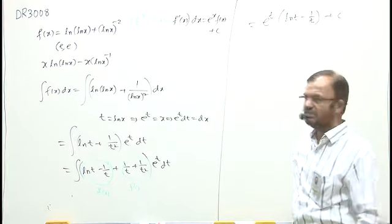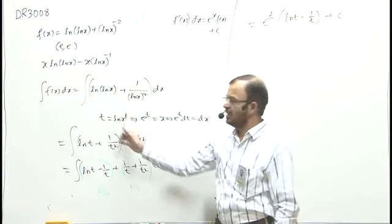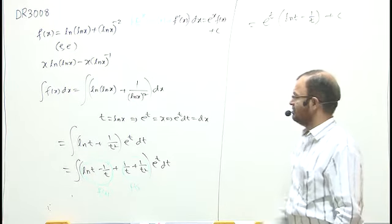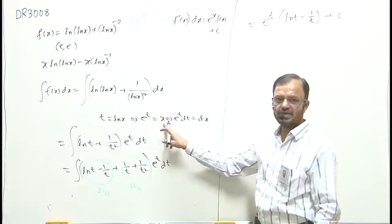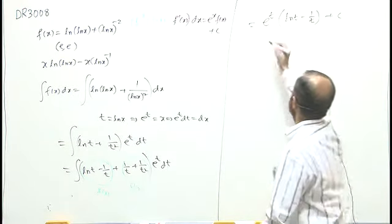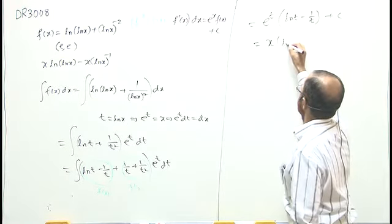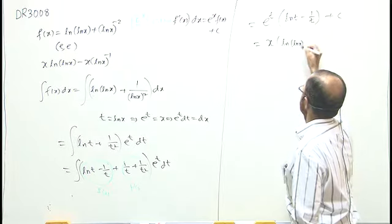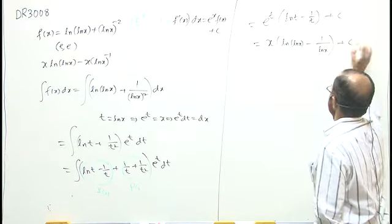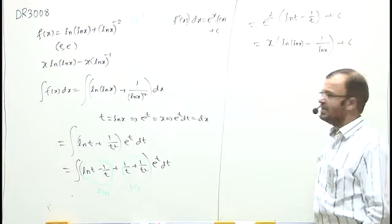Yahaan par question was in terms of x. I have to write the answer in terms of x. I substitute back, that is, I will write, wherever it is e power t, I will write as x. Wherever it is t, then I will write as ln x. This will become x ln of ln x minus 1 by ln x plus constant.